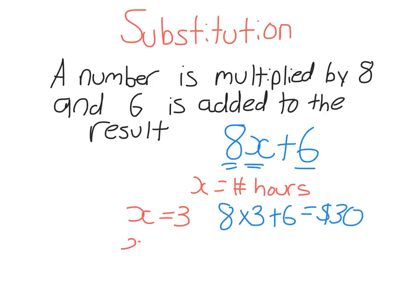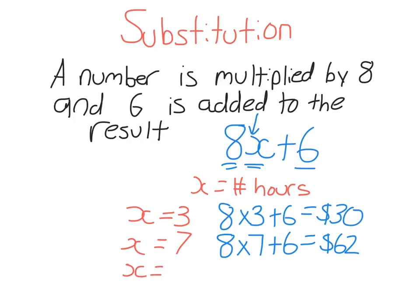Let's say you're going to do a job for 7 hours. We can substitute X for 7, so it would be 8 times 7 plus 6, and you can use your calculator to do this very easily. Make sure you understand that 8X means 8 times X — it doesn't mean the first digit is 8 and the second digit is X. Substitution is pretty easy. Sometimes you will have to substitute a negative number, like negative 5. In that case it would be 8 times negative 5 plus 6, but you can use your calculator, so don't stress too much.